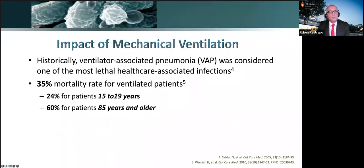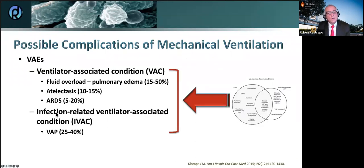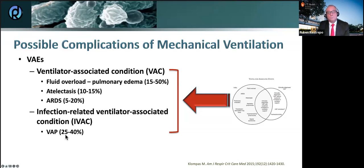The impact of mechanical ventilation on survival is key. Ventilator-associated pneumonia has been an issue because it could become the second leading cause of death in ICU patients associated with infections. Overall mortality is about 35% for ventilated patients, and as you get older, mortality gets higher. Ventilator-associated complications include fluid overload, pulmonary edema — about 10% to 15% — atelectasis, 5% to 20% ARDS, and infection-related ventilator-associated conditions such as pneumonia, which could be as high as 40%.